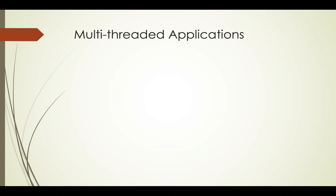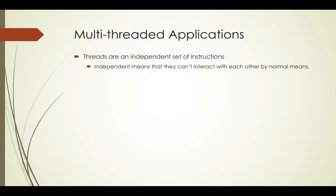Many people think of a thread as the same as a process, and they are similar. Threads are an independent set of instructions, but each process can also have multiple threads inside it. While the threads are independent, they also share some of the same resources — they'll be running in the same memory space, even though they can't interact with each other by normal means. You can't access a variable created in one thread from another thread. They are independent even though they share resources.